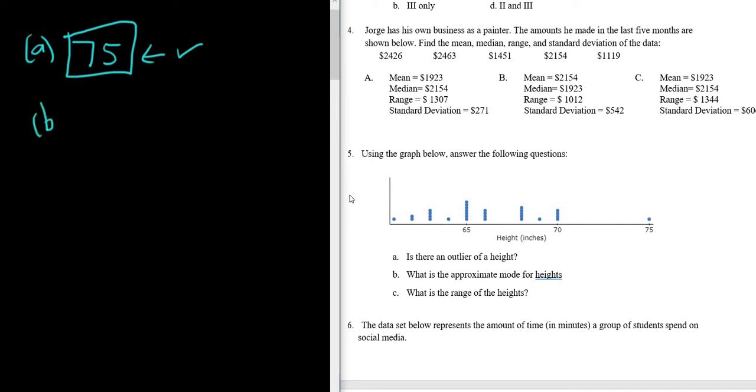Part B, what is the approximate mode for heights? The mode is the one that appears the most. So in this case, you can see the 65 has multiple dots. That means it appears more than the other values. So 65 should be the mode. So this is the mode and this is the outlier.